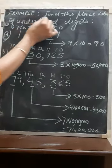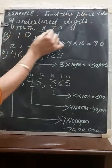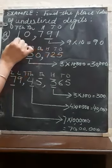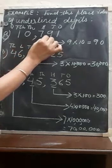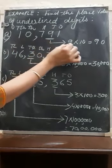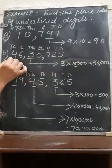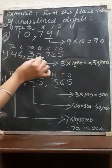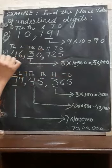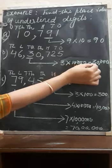In this example, find the place value of the underlined digits. In the numeral 10,791, only 9 is underlined, and 9 is at the tens place. The place value of 9 will be 9 multiplied by 10, which is 90. In part B, the numeral is 46,30,725. Here 3 is underlined and is at the ten-thousands place. The place value becomes 3 multiplied by 10,000, which is 30,000.